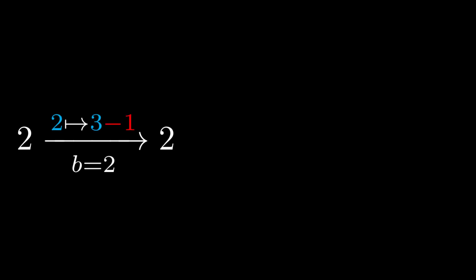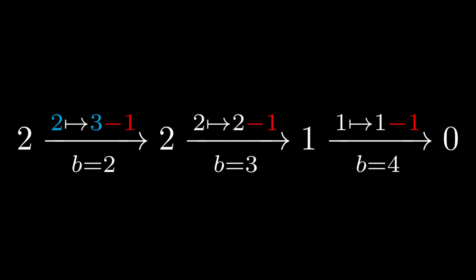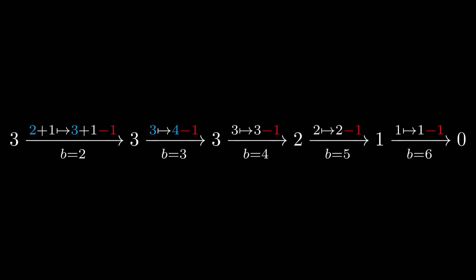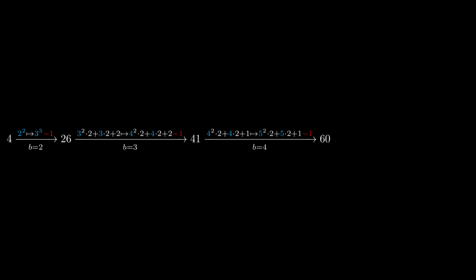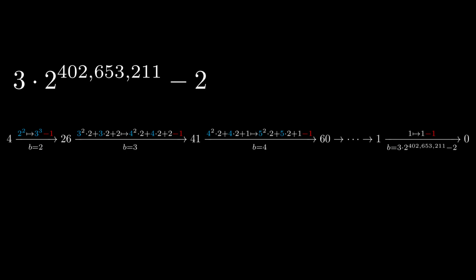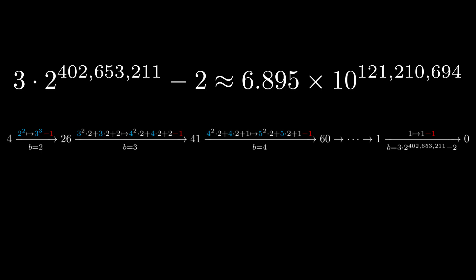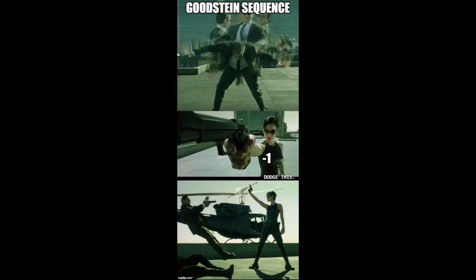If we look at the Goodstein sequence starting with 2, it takes about 4 steps to go to 0. If we start with 3, it takes about 6 steps. And then when we start at 4, this one takes about 3 times 2 to the 402,653,211 minus 2 steps. For the record, this number has over 121 million digits. But no matter how big they get, they're still only finite.